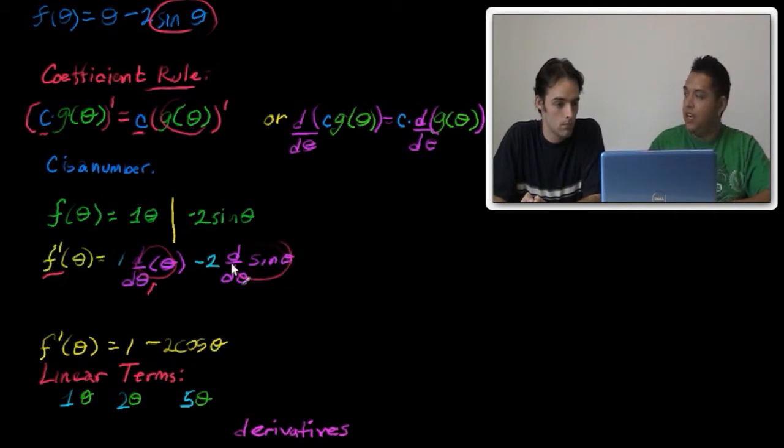Well, what's the derivative of theta? Just 1. So 1 times 1 is 1, minus this constant c. This 2 right here is the constant, 2 comes out, and what's the derivative of sine of theta? Just cosine theta. Cosine theta. And that's what we got.